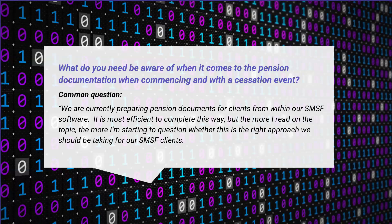There can be multiple cessation events that can occur. It could be simply via a pension rollback, via a failure to have met the pension that requires a rollback, or it could be through some other form of commutation. So understanding the nuances, not only in the context of what the law requires, but then the deed is crucial as well.